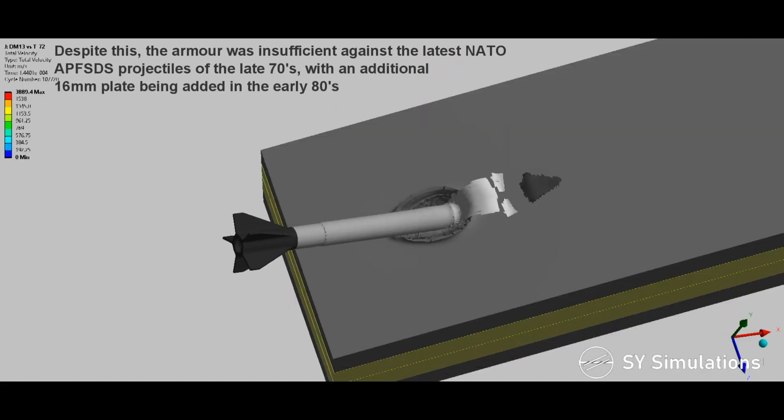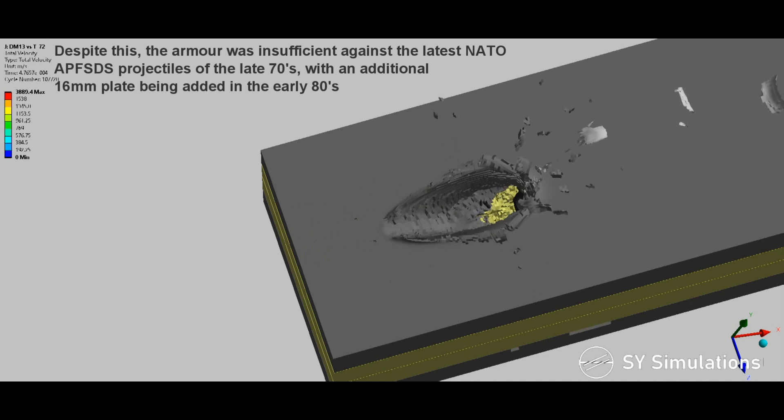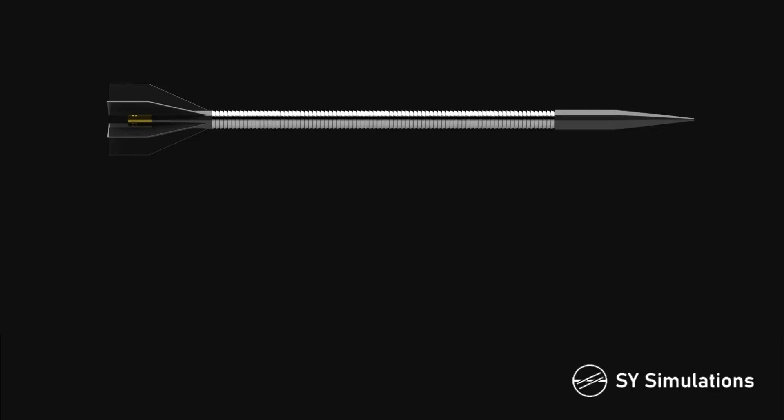Despite this, the armor was insufficient against the latest NATO APFSDS projectiles of the late 70s, with an additional 16mm plate being added in the early 80s.